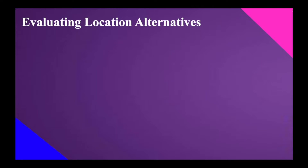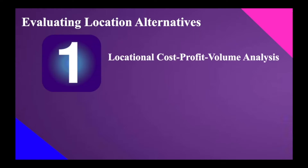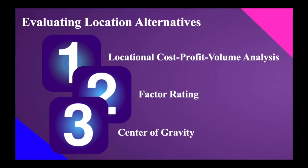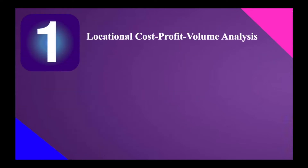We actually have different ways of evaluating location alternatives — recommended mathematical practices. First is the locational cost-profit volume analysis, CPV, or sometimes in the accounting world this is called CVP analysis, the cost-volume-profit analysis. The second one is the factor rating, while the last one is the center of gravity approach. What is the difference of these three? Let's start discussing.